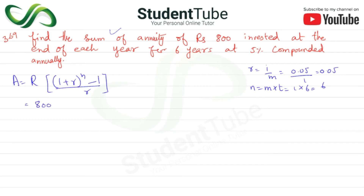Substituting values: FV = 800 × [(1 + 0.05)^6 − 1] / 0.05.